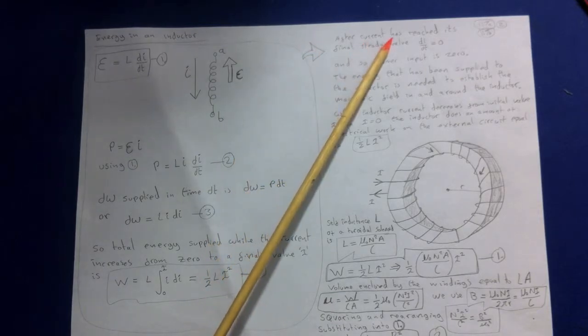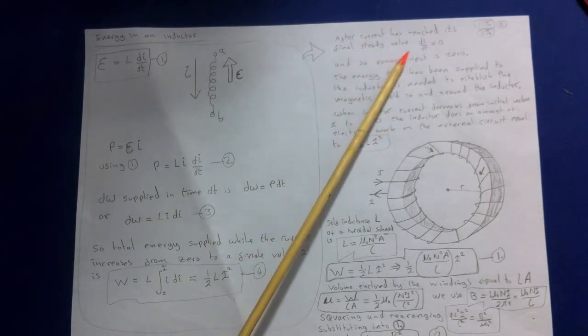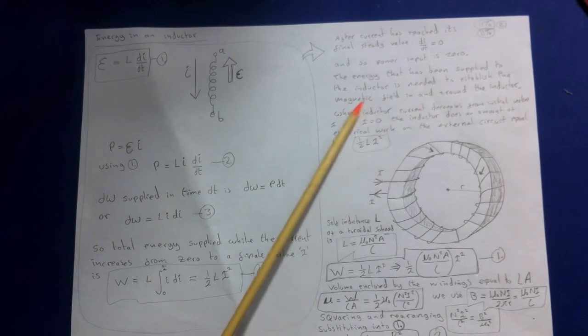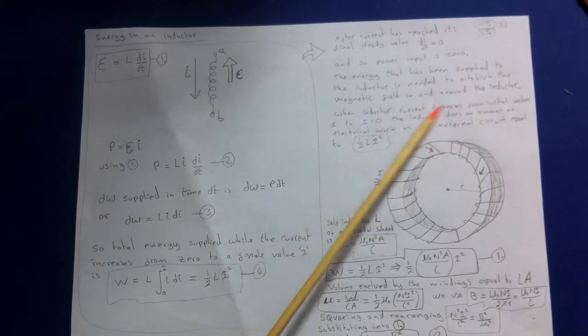So after a current has reached its final steady value, the rate that the current changes is zero, and so power input is zero. The energy that has been supplied to the inductor is needed to establish the magnetic field in and around the inductor.